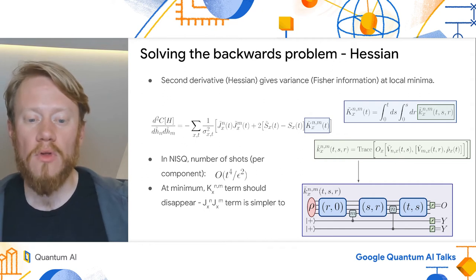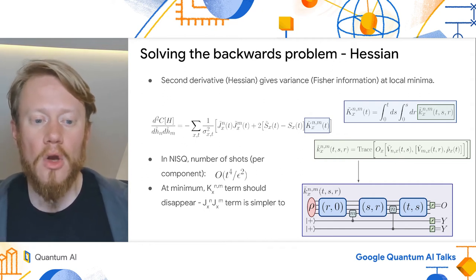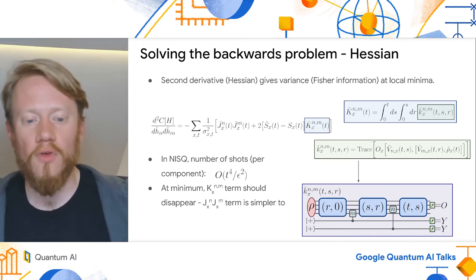This time with two extra qubits, and again with local control and time evolution. We can play the same tricks with integration to give a total shot count in NISQ as t to the fourth over epsilon squared.